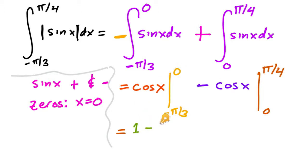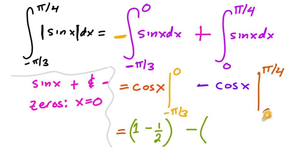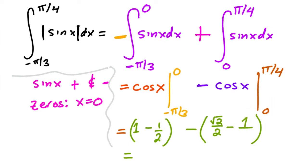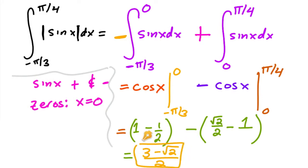Plugging in: cosine of zero equals one, minus cosine of negative pi over three which is one half — that's the first part. Then minus cosine of pi over four which is root two over two, minus cosine of zero which is one. So we get one plus one minus one, which is two, then three minus root two, all over two.